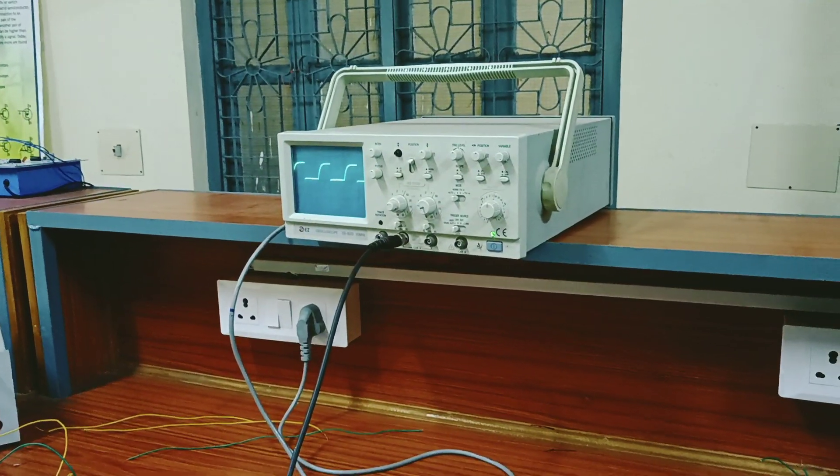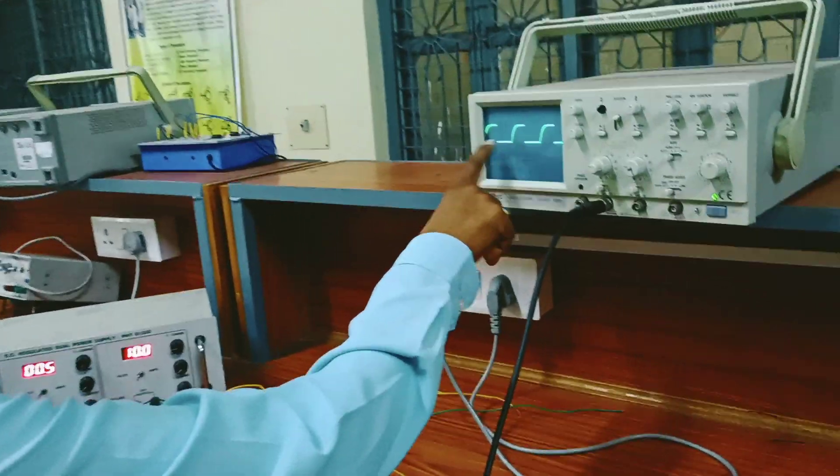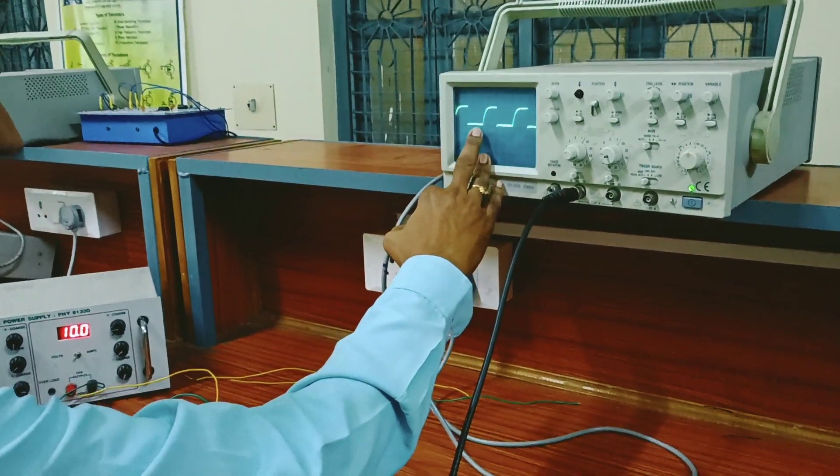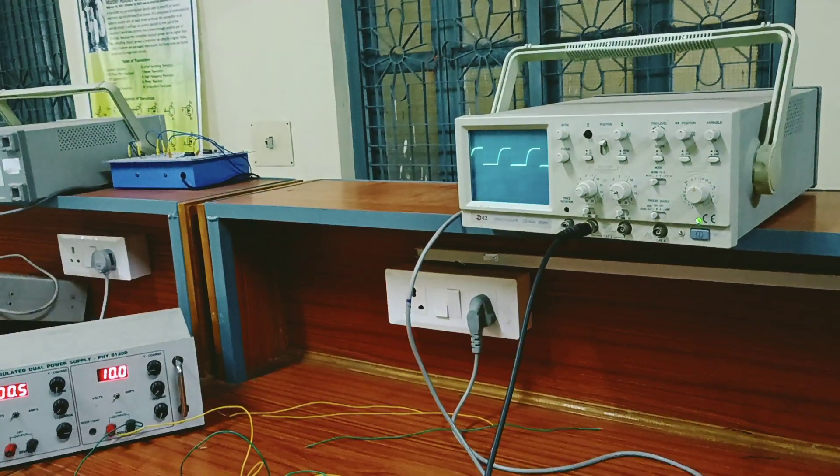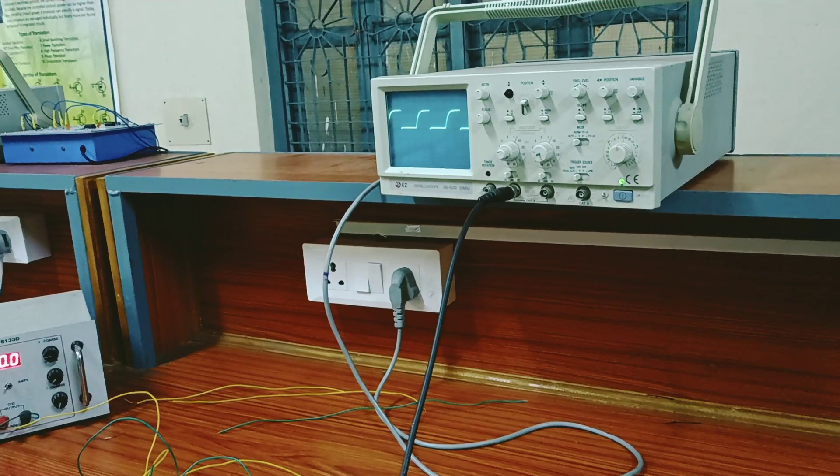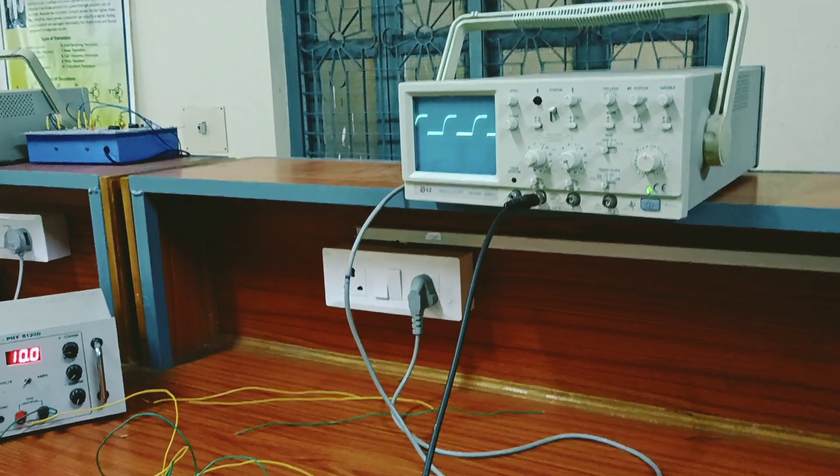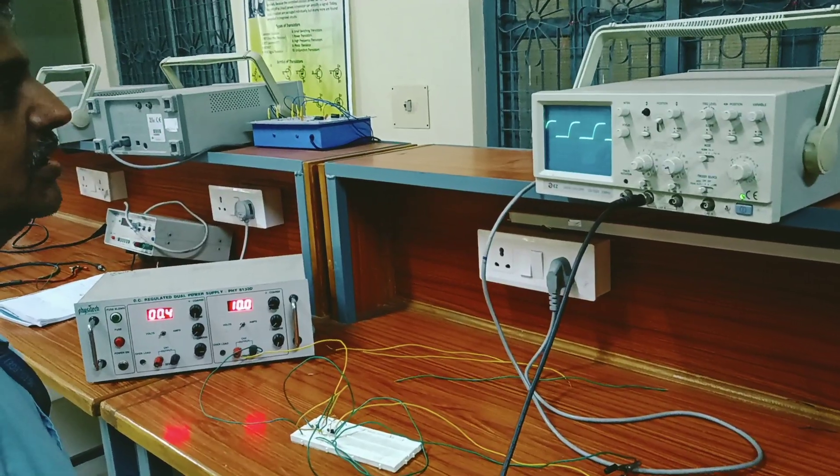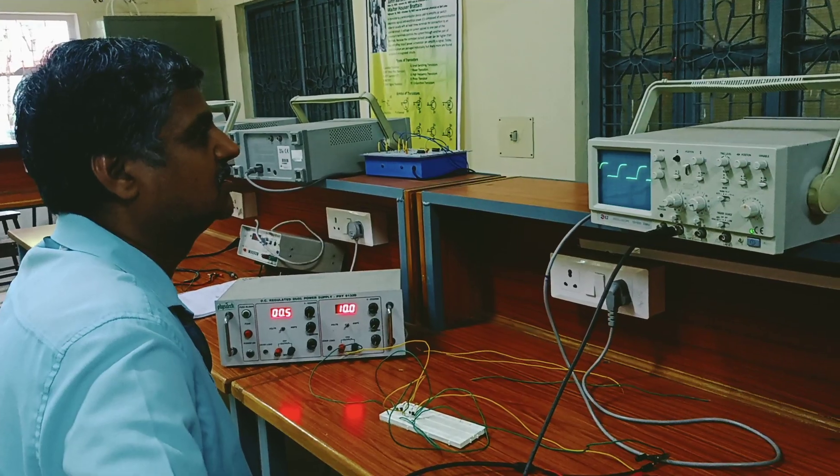So on time, just from here only you can count on the left side, 1.8. Again the time division is 0.1 milliseconds. So 1.8 multiplied by 0.1 milliseconds is the on time. To calculate the time period as I explained, add both the t on and t off, or you may call it t1 and t2. Add both, you will get the time period.